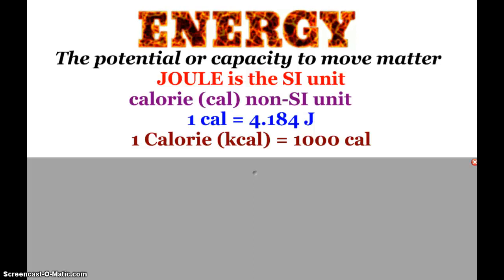But first off, energy is the potential or capacity to move matter. The joule is our SI unit, and we have some non-SI units. The little c calorie is 4.184 joules. A big C Calorie is what you typically see on food labels, also called a kilocalorie, which is a thousand of the little calories. So if someone eats a Snickers bar, they see 220 Calories instead of 220,000 calories with a little c, which makes it a little bit better when you're having that Snickers break.